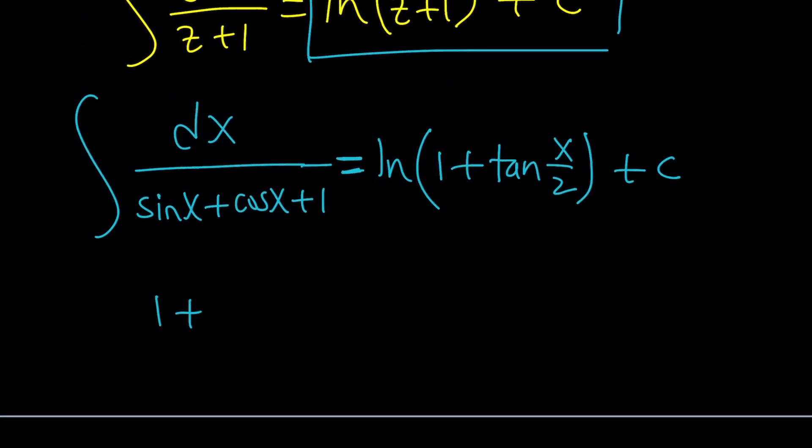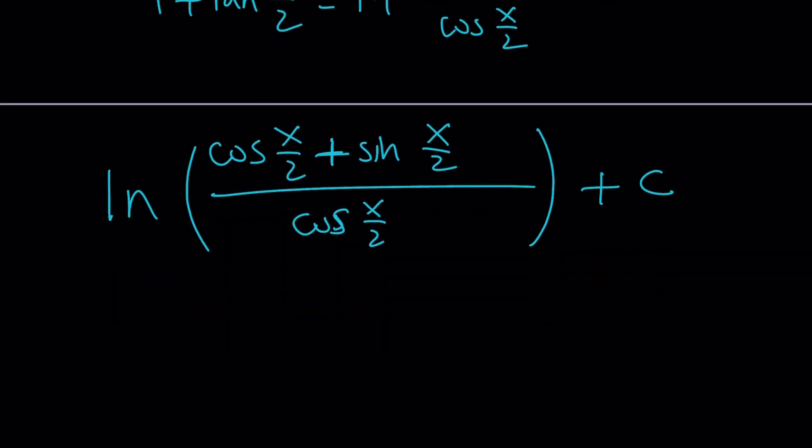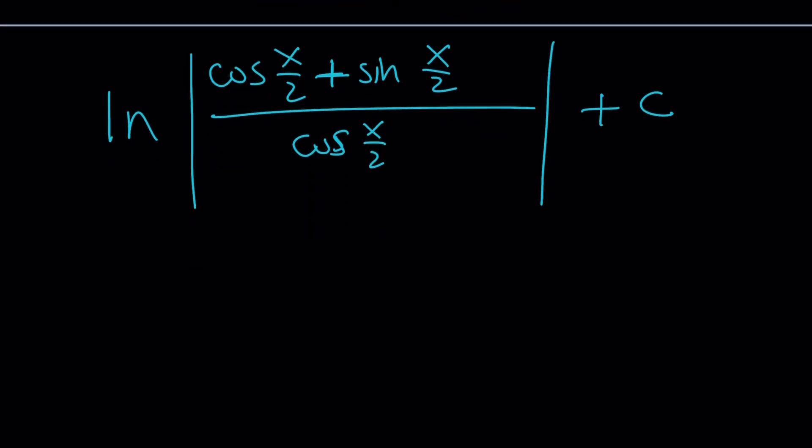We can do the following. 1 plus tangent x over 2 can be written as 1 plus sine x over 2 over cosine x over 2. And then we can make a common denominator. Cosine x over 2 plus sine x over 2 divided by cosine of x over 2. As you can see, we wrote it as a quotient instead of a sum, right? And then we can now ln it and, of course, add the constant. And now we do have the ln of, okay, fine. I'm going to write the absolute value a couple times because that way we can agree with the results, right? Now we have a quotient and the ln of a quotient can be written as the ln of what? I mean the difference of two ln's. So we can write this as follows.